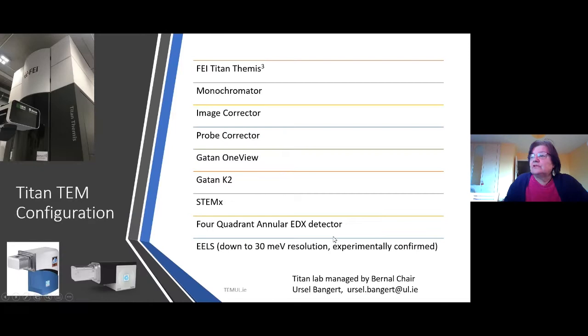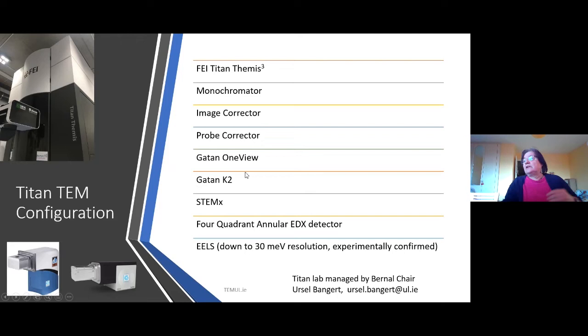The instrument we have is one of literally a handful in the world — a Titan Themis with monochromated, double-corrected optics, with very sensitive detection capabilities including ultra-fast and ultra-sensitive cameras. It can be used in scanning mode and we can do EDX and also energy-loss spectroscopy at 30 meV resolution, which is very unusual. We can do this at a spatial resolution on the Angstrom level.